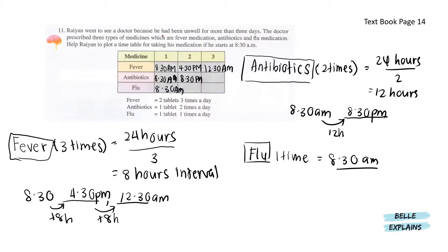Ryan went to see a doctor because he had been unwell for more than 3 days. The doctor prescribed 3 types of medicines: fever medication, antibiotics, and flu medication. Help Ryan plot a timetable for taking his medication if he starts at 8.30am. For fever, 2 tablets 3 times a day. 24 hours divided by 3 gives 8 hours interval. Starting at 8.30am, plus 8 hours gives 4.30pm, then plus 8 hours gives 12.30am. So the times are 8.30am, 4.30pm, and 12.30am.